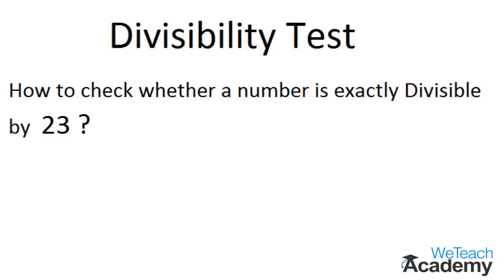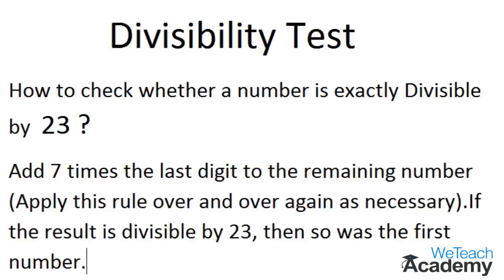To check whether a number is exactly divisible by 23, add 7 times the last digit to the remaining number. Apply this rule over and over again as necessary. If the result is divisible by 23, then so was the original number.